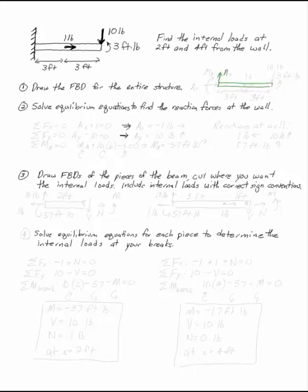So we'll have Ay and Ax and a moment at the wall in addition to our 1 pound load in the middle, the 10 pound load at the end, and the 3 foot pound moment at the end.